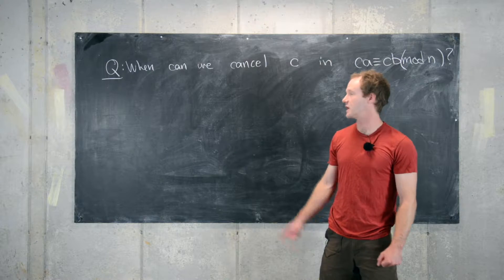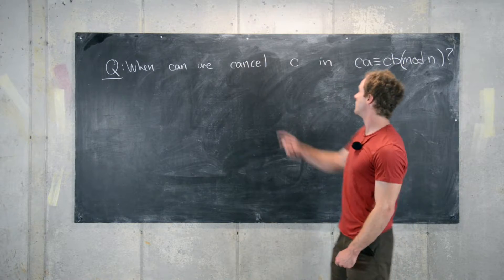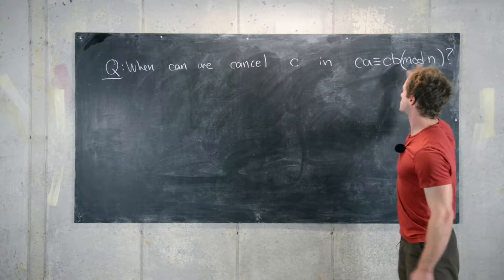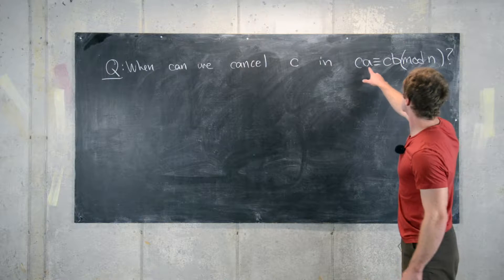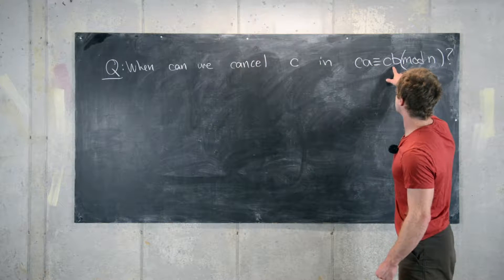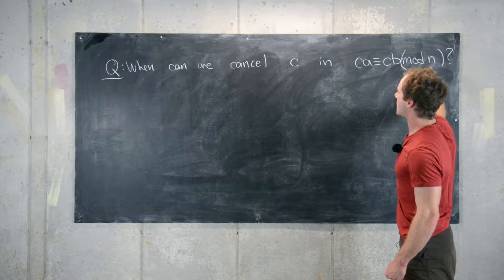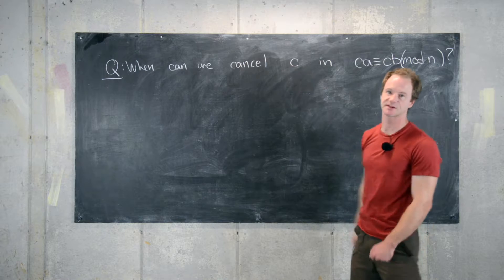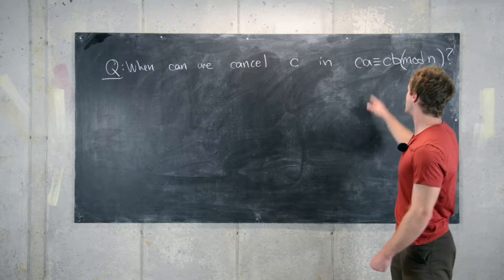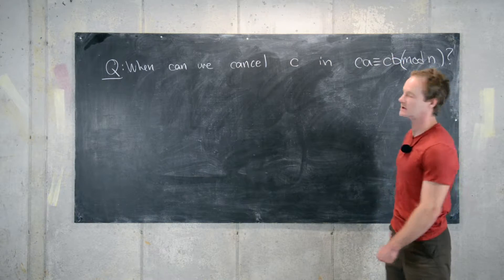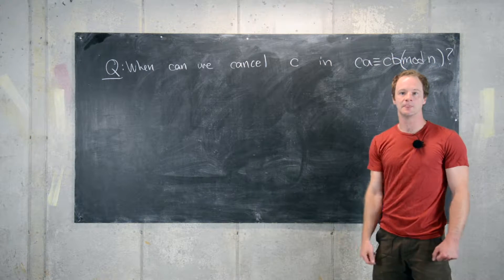In this video we're going to look at the following question: if we have a modular equivalence, CA is congruent to CB mod N, when can we cancel C? In other words, when do we know that A is congruent to B mod N?